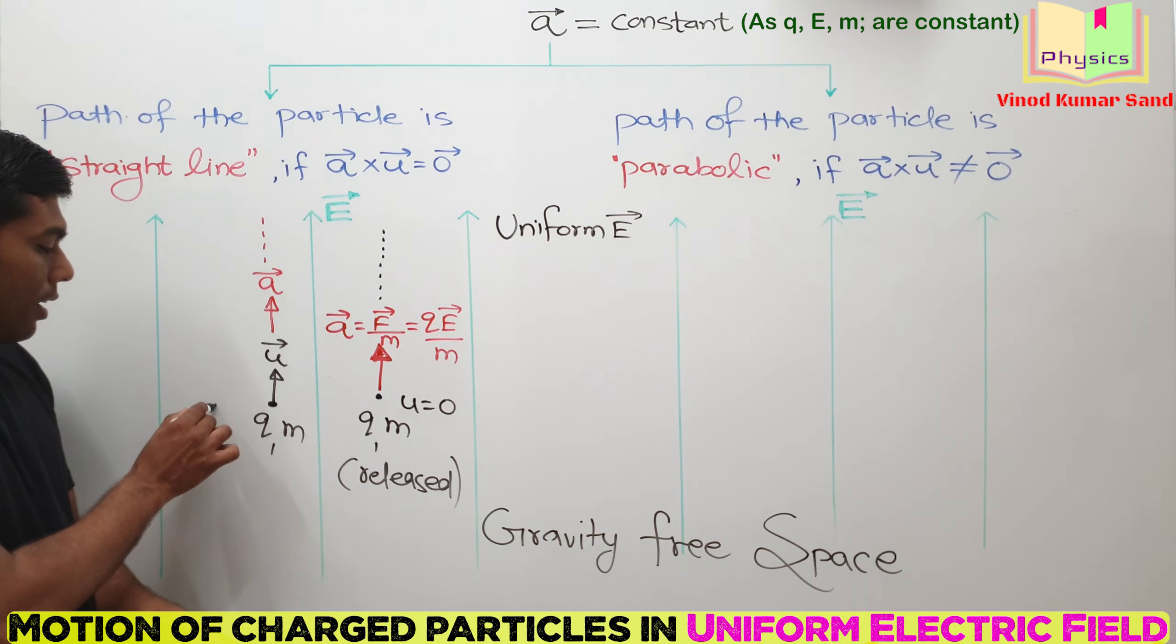Suppose a particle was given U vector like this, vertically downwards. Particle has charge Q, mass M. Now for this particle also, the A vector is upward. What will be the path of this particle?